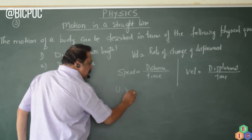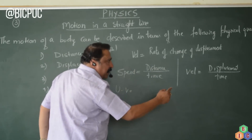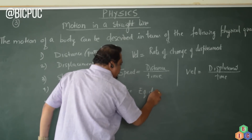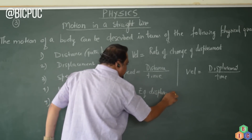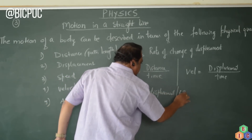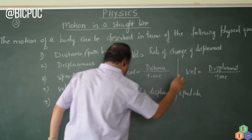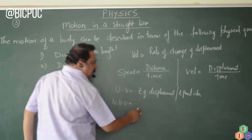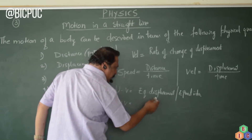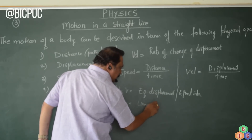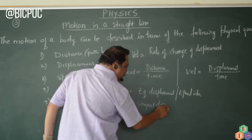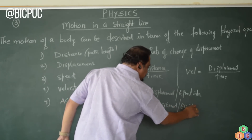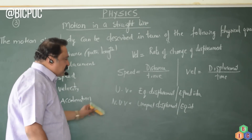Uniform velocity: if a particle undergoes equal displacement in equal intervals of time, it is uniform velocity. Non-uniform velocity or variable velocity: if a particle undergoes unequal displacement in equal intervals of time, then it is non-uniform velocity.